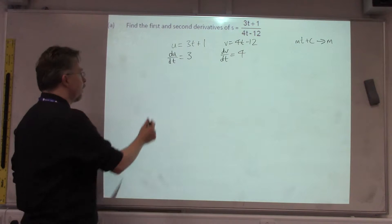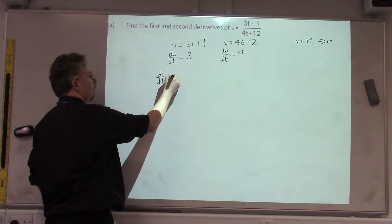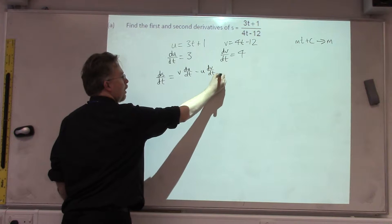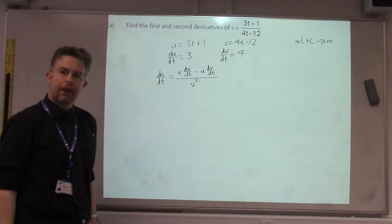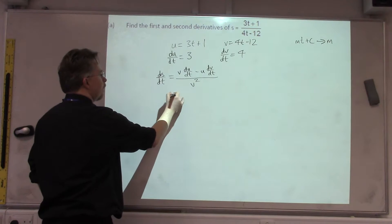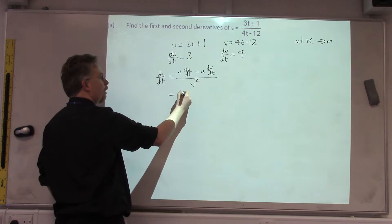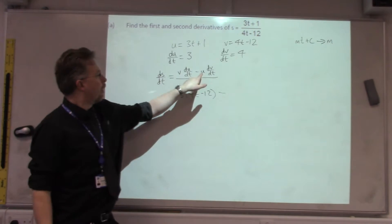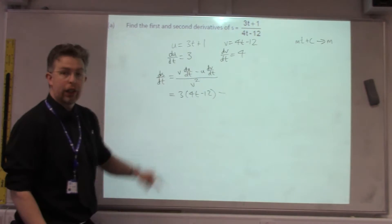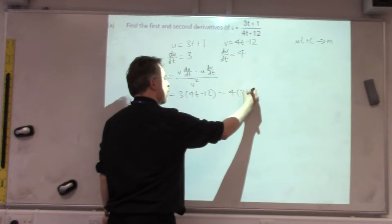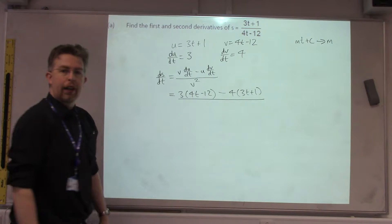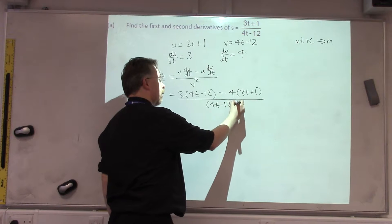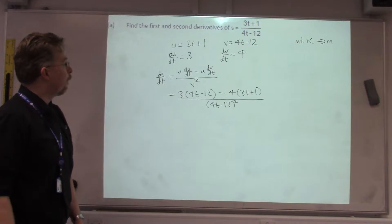Right, so the Quotient Rule to give us the S by the T is equal to V times the U by the T minus U times the V by the T all over V squared. So, we stick those into the formula. So, V times U by the T is 3 times 4T minus 12 minus U times the V by the T. So, 4 times 3T plus 1, all divided by V squared. So, that's our V, 4T minus 12, and we square it.